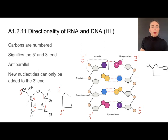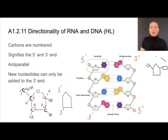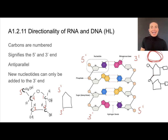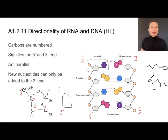One of the reasons why this is so important is because new nucleotides can only be added to the three prime end. So if I have this nucleotide here, I can add a new nucleotide to the three prime end and form that covalent bond right here. What I cannot do is add a nucleotide to the five prime end — you cannot do that. So looking at this molecule, I could add new nucleotides down here on this strand or up here on this strand, but not to the five prime end of either molecule.